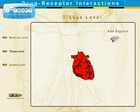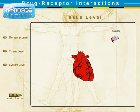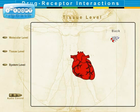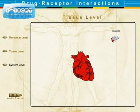Here we see the action of digoxin on the weak rapid heart rate characteristic of CHF. There is an increased strength of contraction — positive inotropy — thereby increasing stroke volume, decreasing preload, and increasing the ejection fraction.